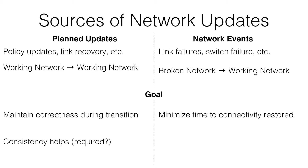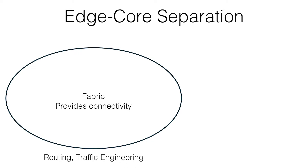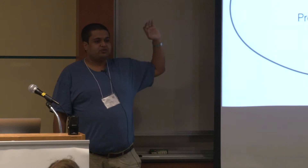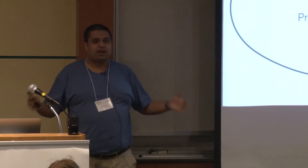Consistency helps when you want to maintain correctness; it just adds latency when you want fast recovery. Also, for better or for worse, if you look around, networks have bought into an edge-core split. The original SDN idea was that the core implements interesting policies, but that's not how networks are designed anymore. Networks have fabrics implementing routing and traffic engineering, while security policies like ACLs or traffic prioritization are placed at the edge. Those edge policies are local and you can use lighter-weight consistency mechanisms for them.